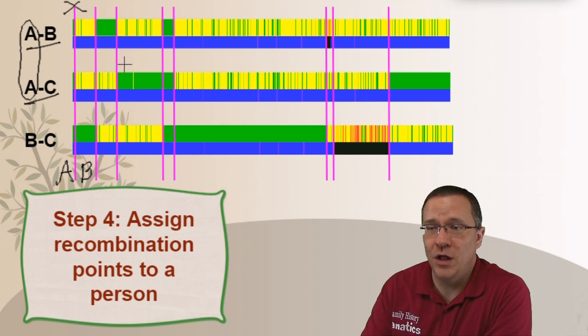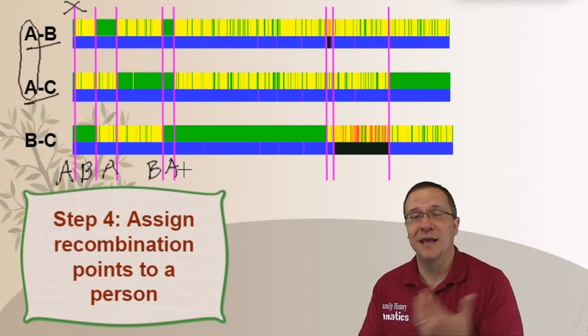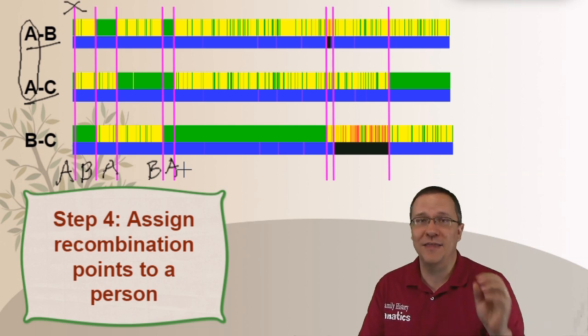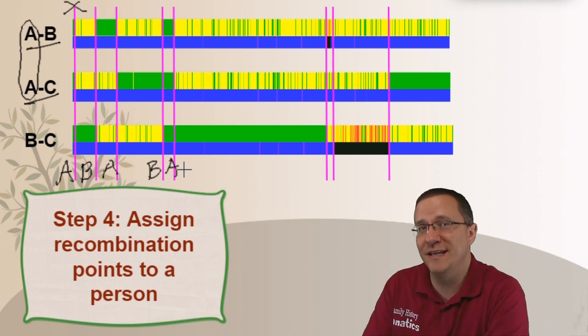Same thing as we go through all these. This next one is going to be an A because it has those two in common. This one is going to be a B because it has those two in common. This next one is an A. We are going with an A, B, A, B, A.